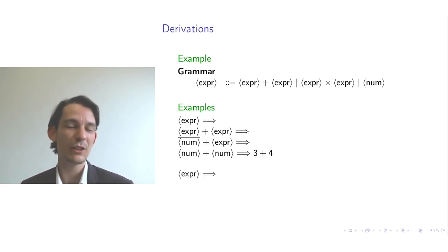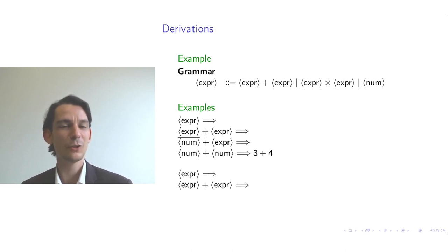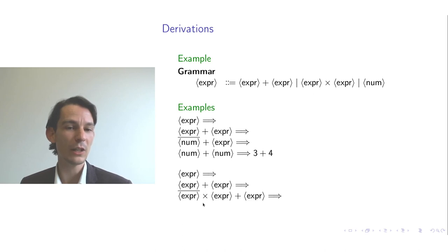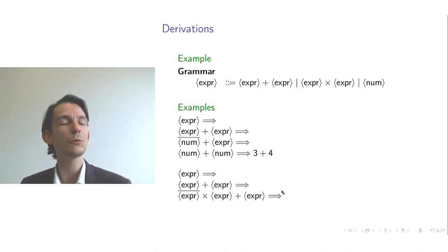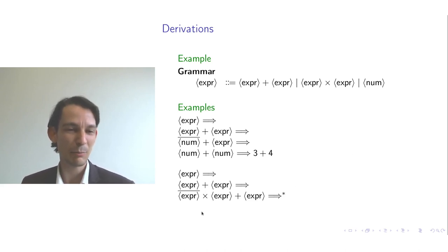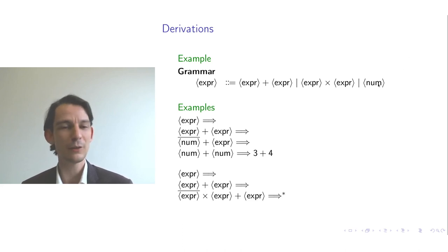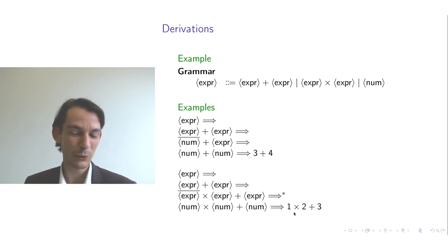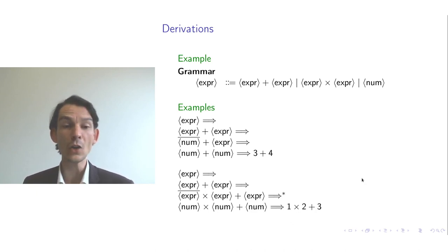Another derivation starts with expression, choosing expression plus expression. This time on the left side we choose the multiplication alternative, giving expression times expression plus expression. Replacing all expressions with numbers and choosing the values 1, 2, and 3, we obtain the string 1 times 2 plus 3. So there exists a derivation of this string in our grammar.